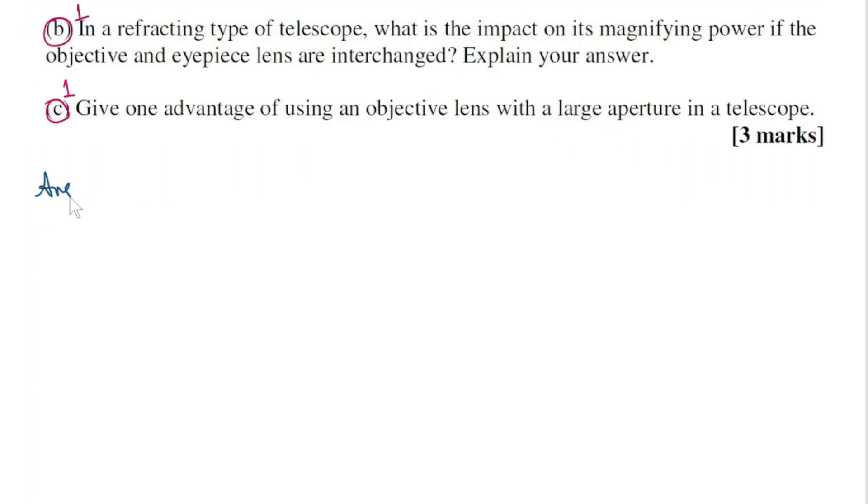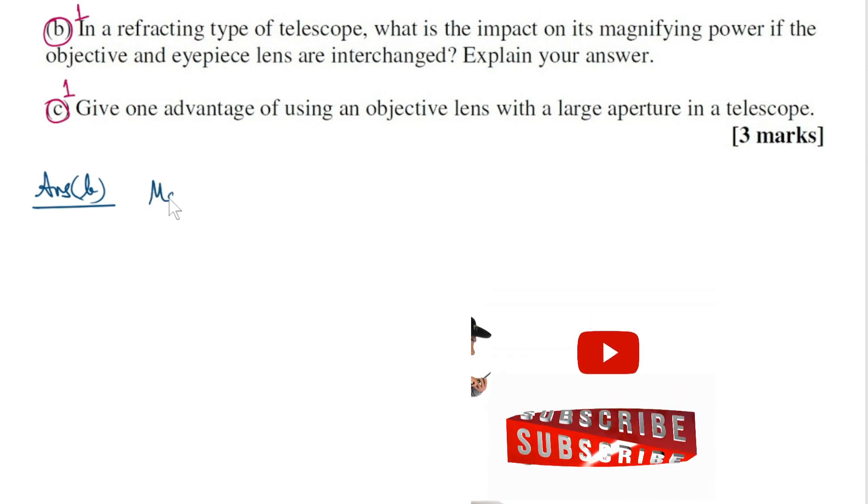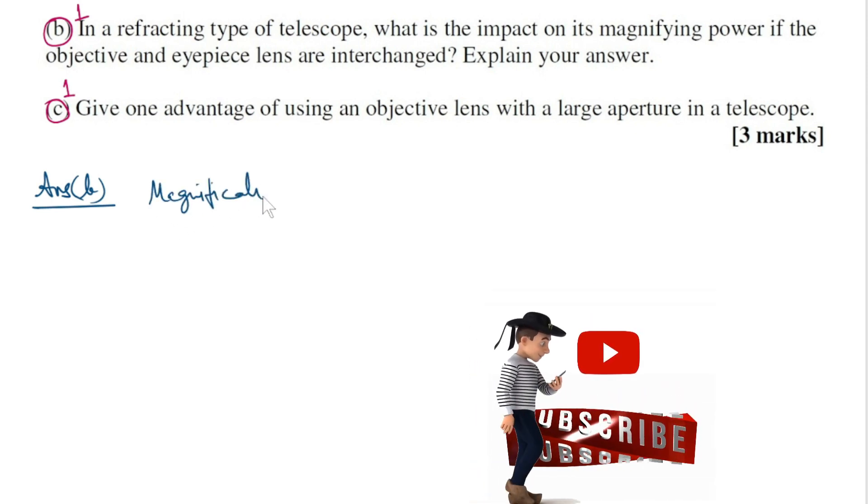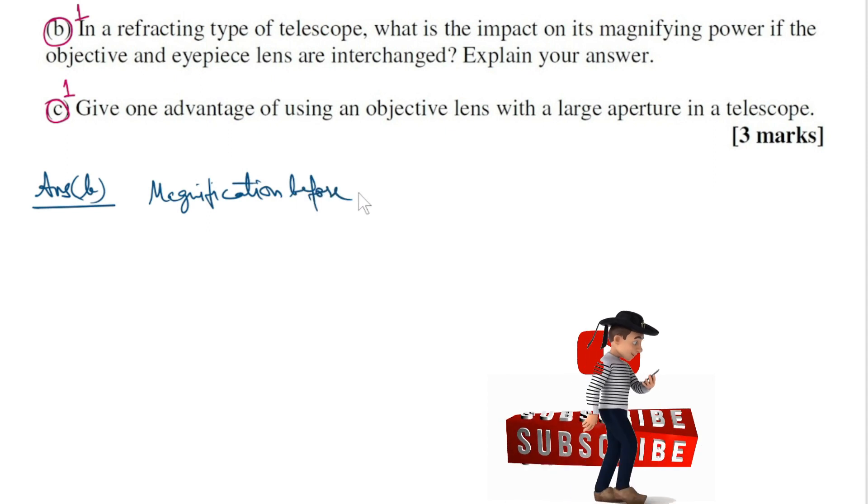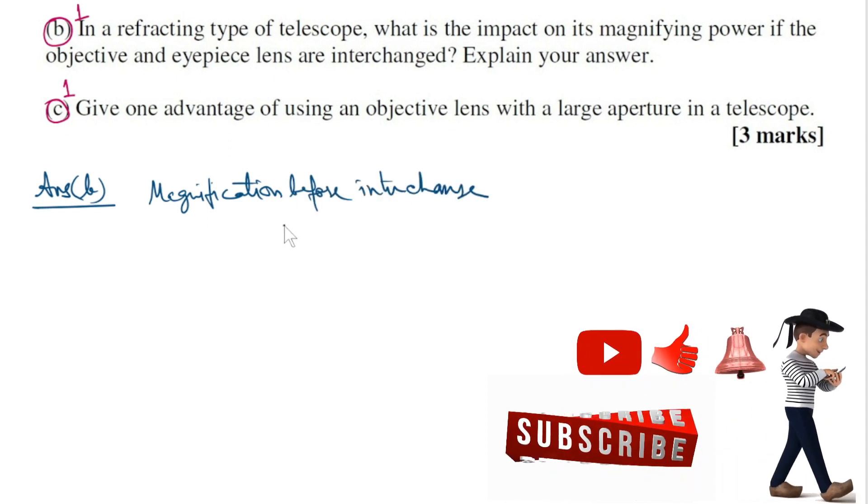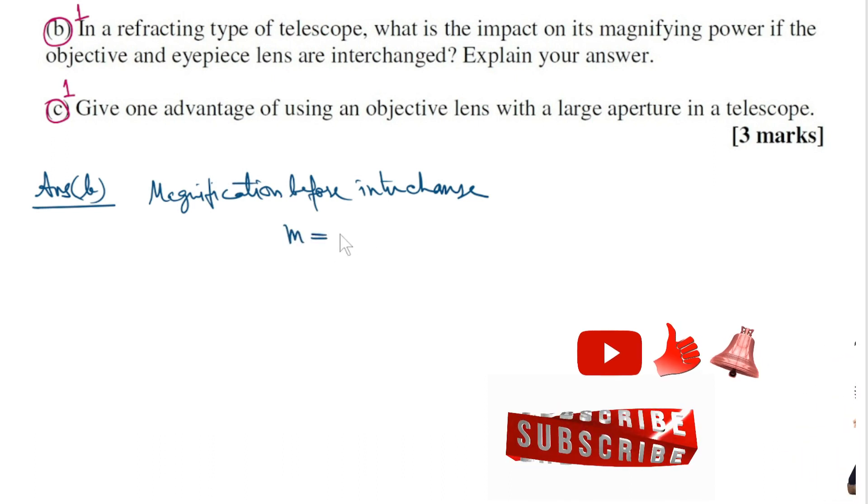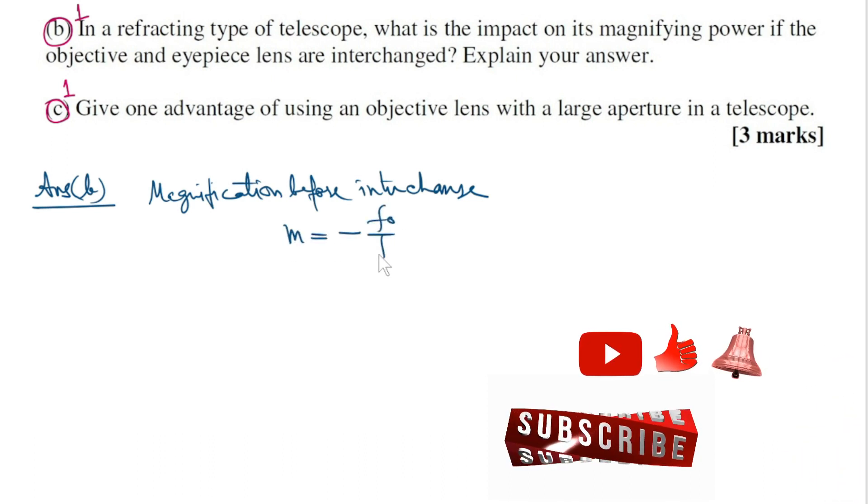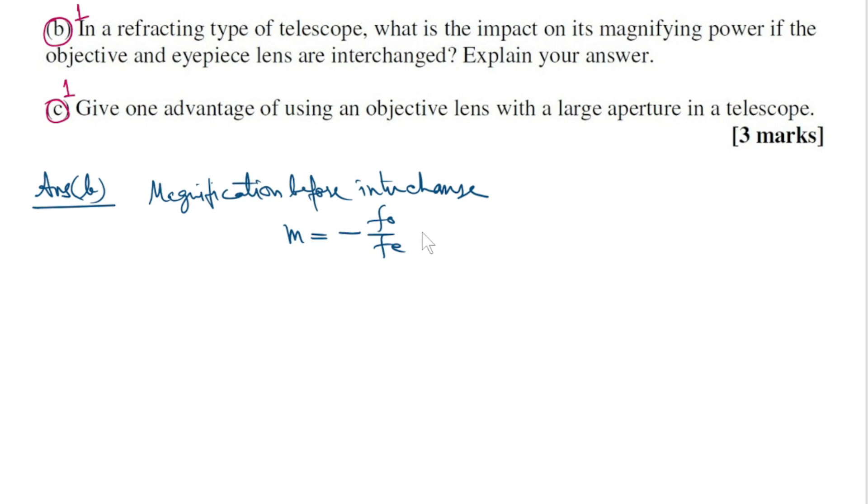Now answer to part B. Magnification before interchange: M equals to minus FO by FE. As FO is much much greater than FE, so M is also much greater than 1.